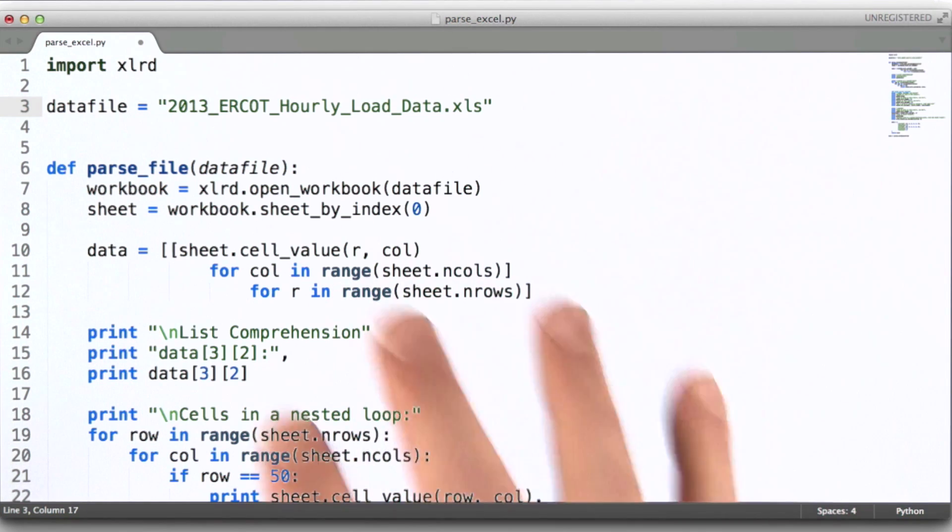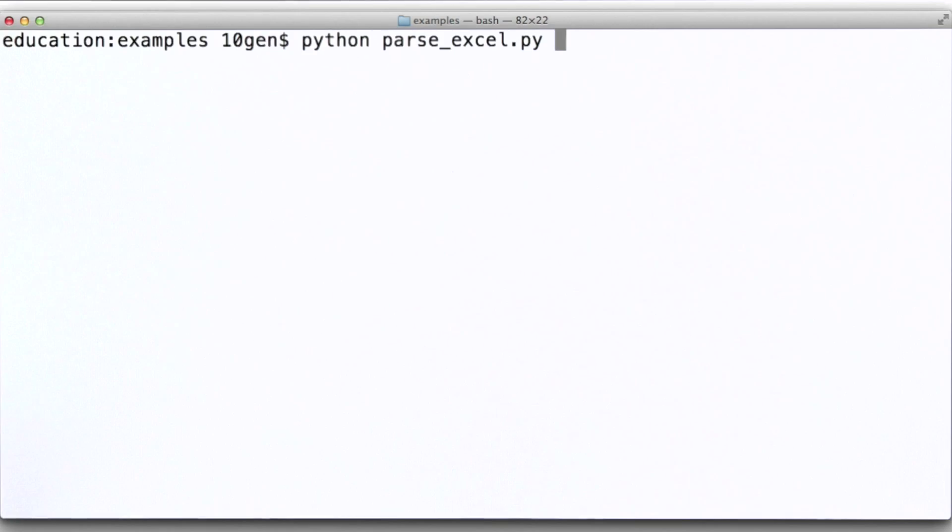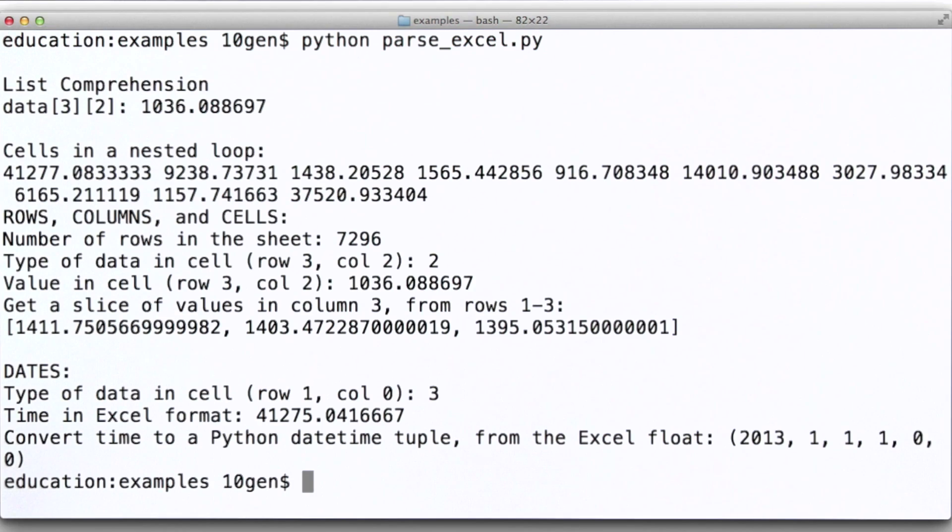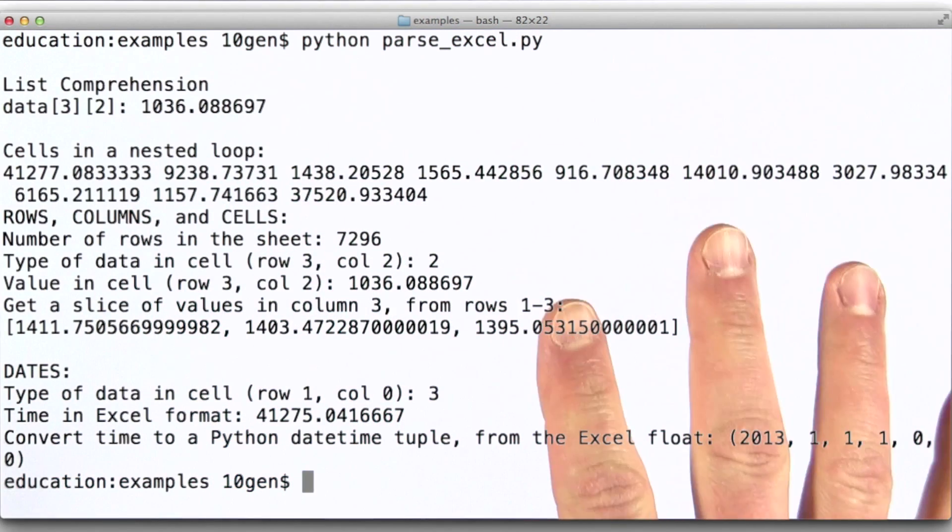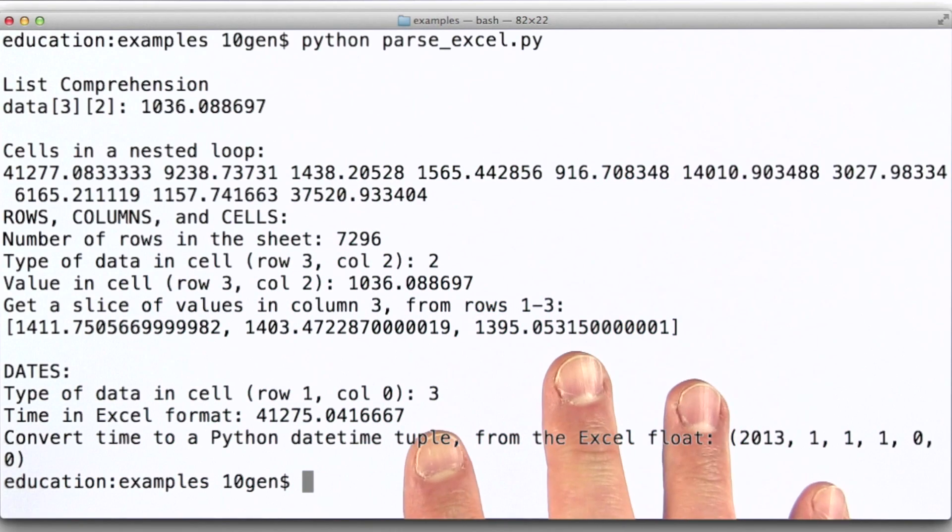So the first thing that I want to do before we dive in and take a look at this example code is actually go through and run it. What I've done with this program is produced output that illustrates a lot of the features that you might want to work with when using XLRD, when processing Excel data.